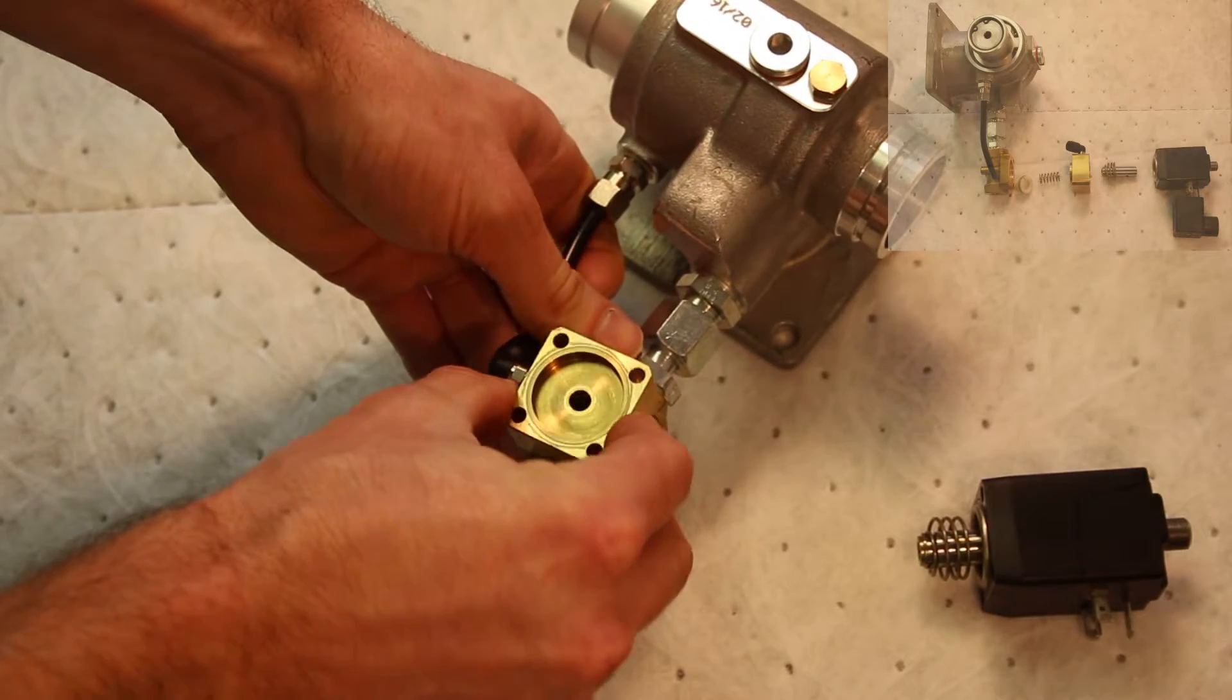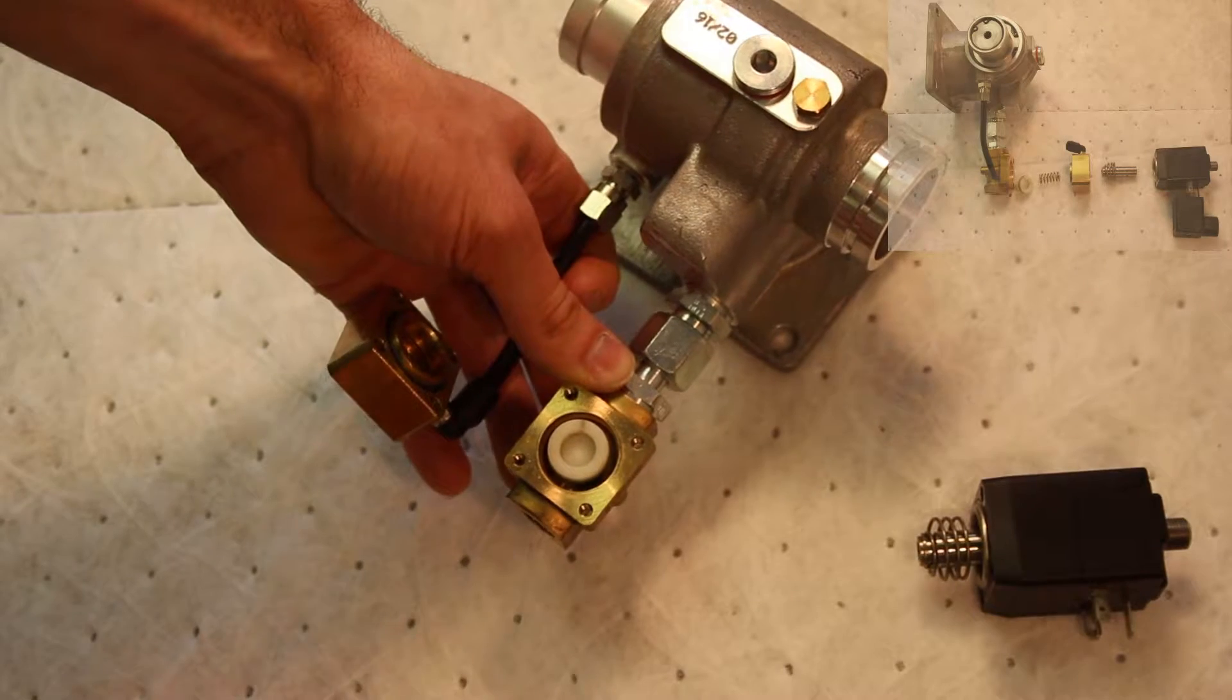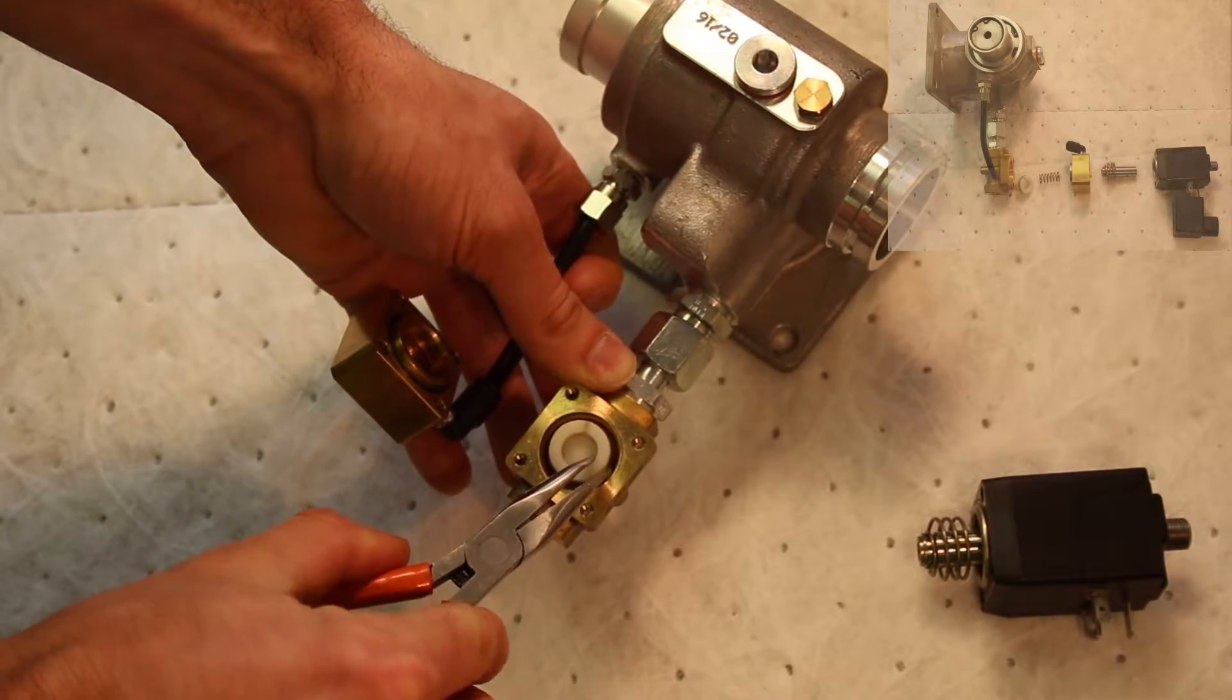Carefully lift the brass body found underneath the solenoid valve, taking care not to damage the tubing or the push connect fitting that it is attached to. The solenoid poppet and spring are contained under this body.